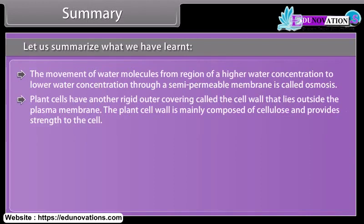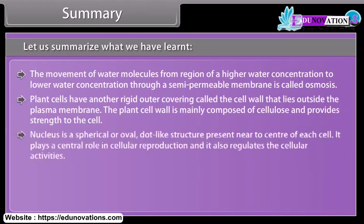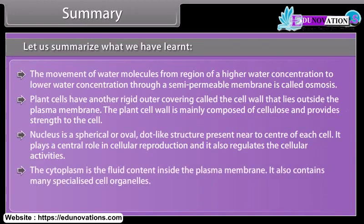Plant cells have another rigid outer covering called the cell wall that lies outside the plasma membrane, mainly composed of cellulose and providing strength to the cell. The nucleus is a spherical or oval, dot-like structure present near the center of each cell. It plays a central role in cellular reproduction and regulates cellular activities. The cytoplasm is the fluid content inside the plasma membrane and contains many specialized cell organelles.